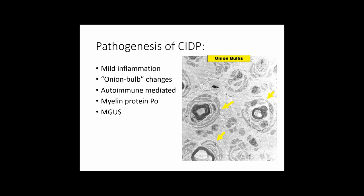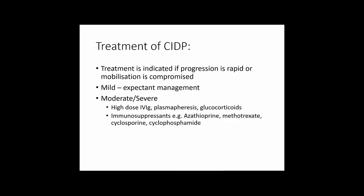Pathologically, CIDP is characterized by repeated cycles of axonal death and regeneration leading to onion-bulbing — layers of myelin death, scarring, and reformation — a characteristic feature for exams. Treatment of CIDP is indicated for rapid progression or compromised mobility. Mild disease can be managed expectantly. For moderate or severe disease, treatment involves IVIG, plasmapheresis, or glucocorticoids along with immunosuppressants.